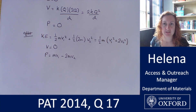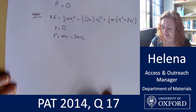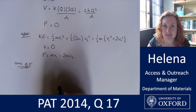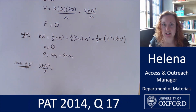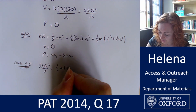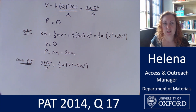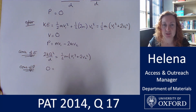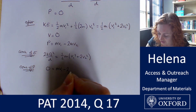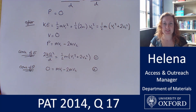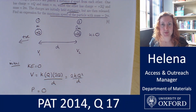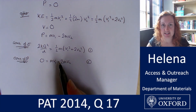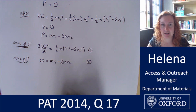Now we can apply conservation of energy and conservation of momentum. Conservation of energy gives us: 2kq² over d equals one half m times (v1² + 2v2²). Conservation of momentum gives us: zero equals mv1 minus 2mv2. So we essentially have two simultaneous equations. We're being asked to find the maximum speed of particle two, which is v2. We can rearrange equation two to make v1 the subject, and then eliminate v1 from equation one to solve for v2.